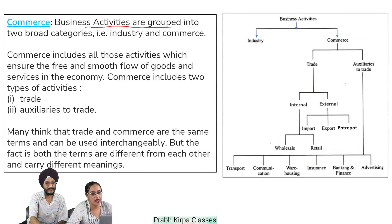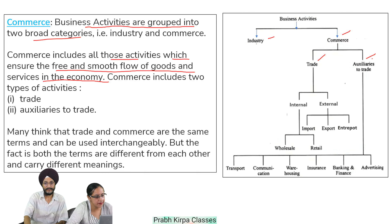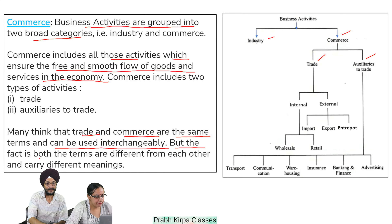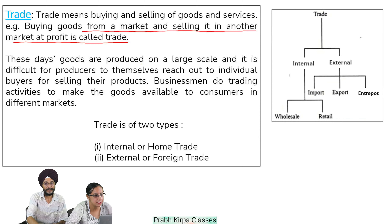Business activities are grouped into two broad categories: industry and commerce. Commerce includes all those activities which ensure the free and smooth flow of goods and services in the economy. Commerce includes two types of activities: trade and auxiliaries to trade. Many think that trade and commerce are the same terms and can be used interchangeably, but the fact is both terms are different and carry different meanings. Trade means buying and selling of goods and services. For example, buying goods from a market and selling them in another market at profit is called trade.